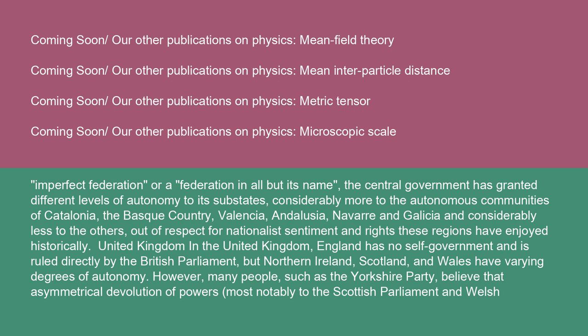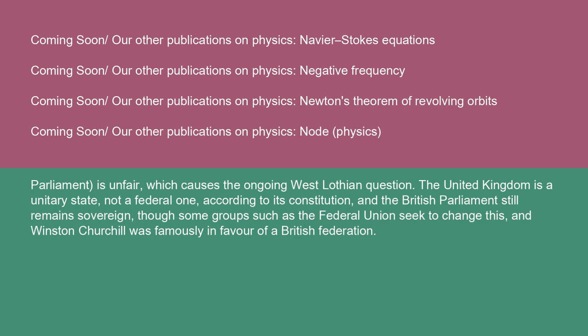United Kingdom: England has no self-government and is ruled directly by the British Parliament, but Northern Ireland, Scotland, and Wales have varying degrees of autonomy. However, many people, such as supporters of the Yorkshire Party, believe that asymmetrical devolution of powers — most notably to the Scottish Parliament and Welsh Parliament — is unfair, which causes the ongoing West Lothian question. The United Kingdom is a unitary state, not a federal one, according to its constitution, and the British Parliament still remains sovereign, though some groups, such as the Federal Union, seek to change this. Winston Churchill was famously in favor of a British federation.